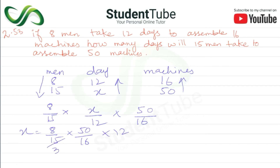Calculating: 5 threes are 15, 5 ones are 5, then 2 ones are 2, 2 sixes are 12, 8 ones are 8, 3 ones are 3, 3 twos are 6. X is equal to 20 days.